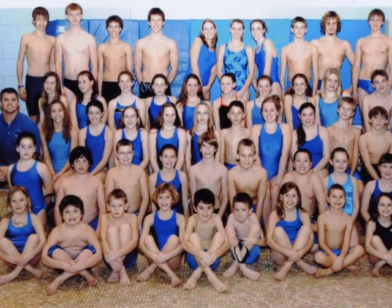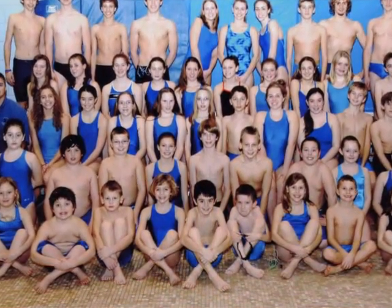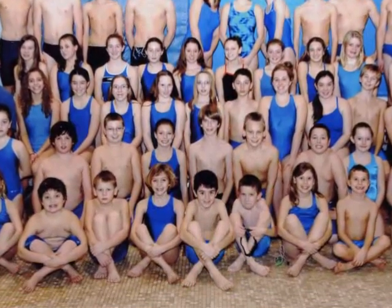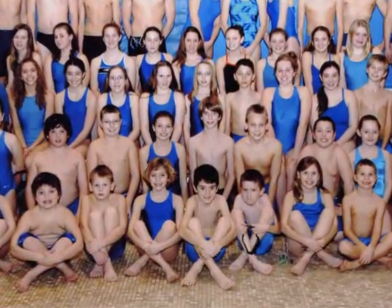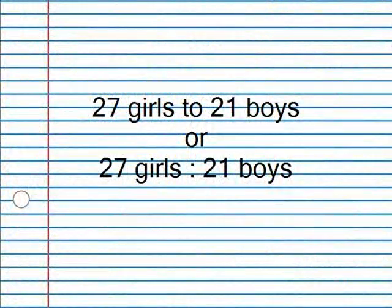Look at the picture of the school swim team. We can see that there are many more than 16 people. In fact, there are 27 girls and 21 boys to be exact — that's a total of 48 people. The ratio would look like this: 27 girls to 21 boys. Or we can write it like this: 27 girls colon 21 boys. Remember, these mean the same thing.